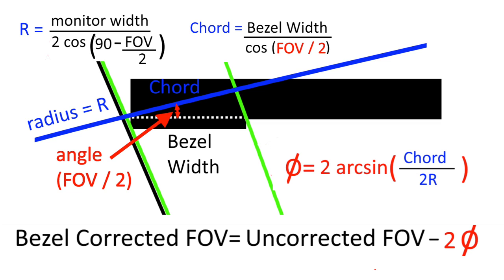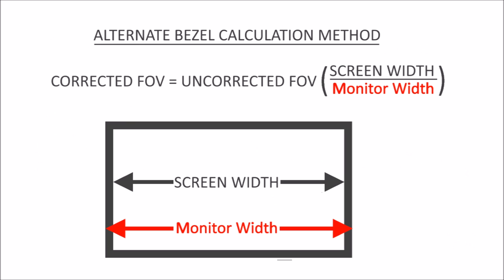One caveat: if you're going to do the calculations, be sure to use your calculator set to degrees instead of radians. An alternate way to calculate the corrected field of view is to take the uncorrected value and multiply it by the ratio of the screen width to the monitor width. This seems to work pretty well when the field of view is not too large and the bezels are not very wide.